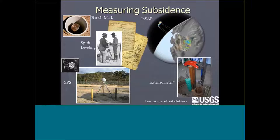How do we measure subsidence? Historically, we've used benchmarks and networks with spirit leveling, which is still the most accurate way to measure elevation change, but it's expensive and doesn't provide many data points — typically done along highways or railways. More recently, in the last 20 years, we've used GPS, which brings costs down a bit, though vertical GPS accuracy is only about plus or minus two centimeters if you're lucky.